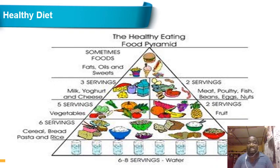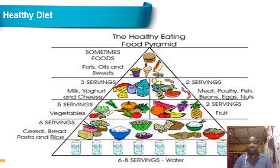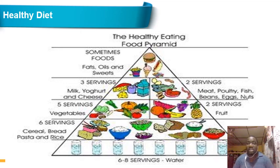You should take about five servings of vegetables per day and two servings of fruits per day. Take about three servings of yogurt and cheese per day. Take two servings of milk, poultry, fish, beans, eggs, and nuts. When taking meats, take more of lean meats and white meats. For fish, take more of non-oily or non-fatty fish.